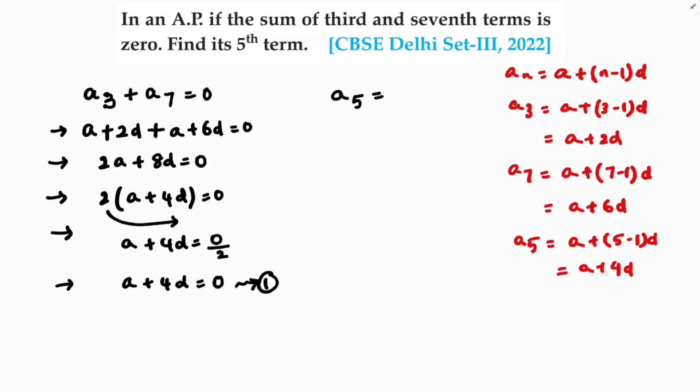Now I need to find a5. a5 is a plus 4d, and a plus 4d value is 0.